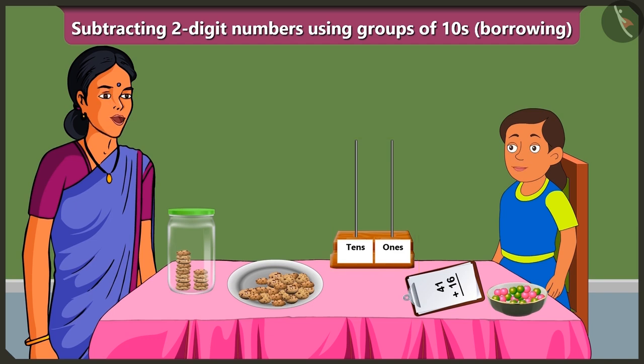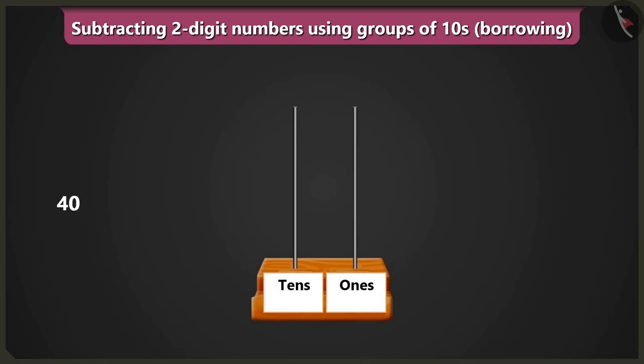Come on, let me explain. We have to subtract fifteen from forty. So if we put four beads in the box of tens, then it will be four tens, which means forty.